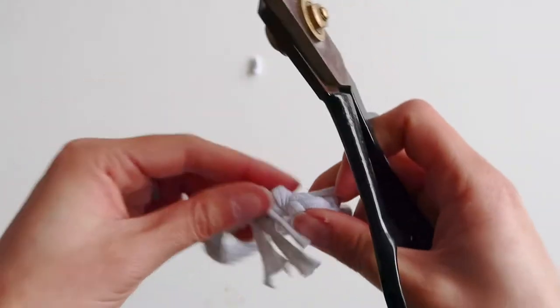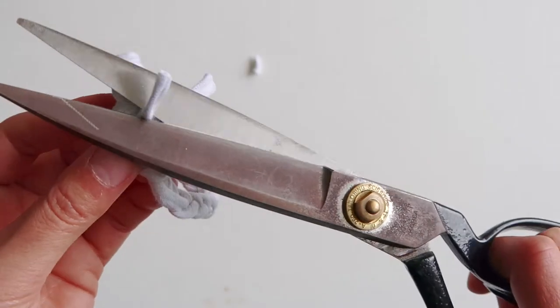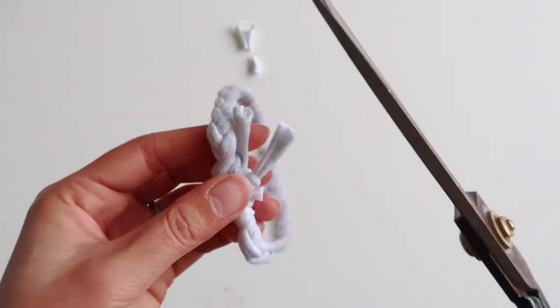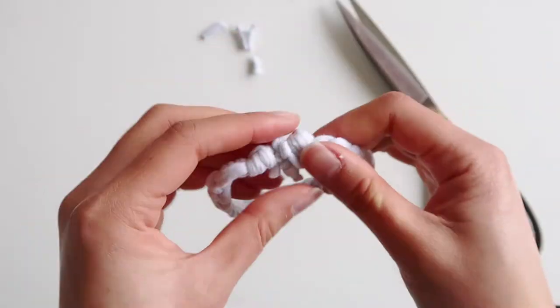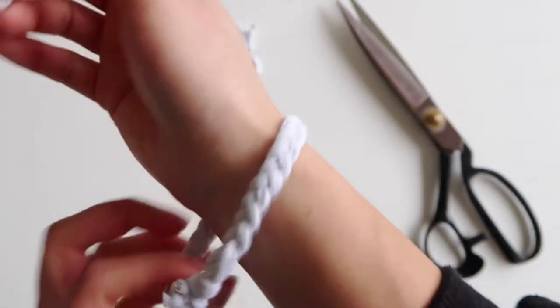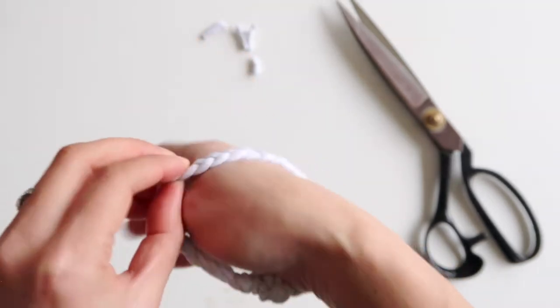Just allow your child to figure things out for themselves and they might come up with their own solutions. Once you're done tying all those knots you can just trim off the ends. Be careful not to trim them too short otherwise your knots might come undone.